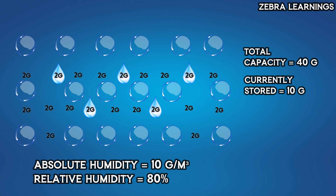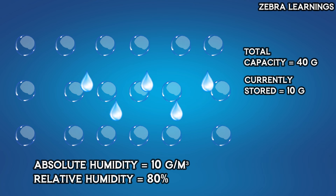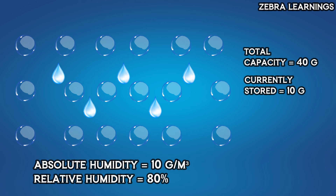Now let's measure the absolute humidity value. It still contains 10 grams of water vapor. That means, even though the temperature increased, the mass value of the water vapor did not change. So its absolute humidity value is still 10 grams per cubic meter. From this, we understand that the absolute humidity value does not change even if the air temperature increases or decreases.